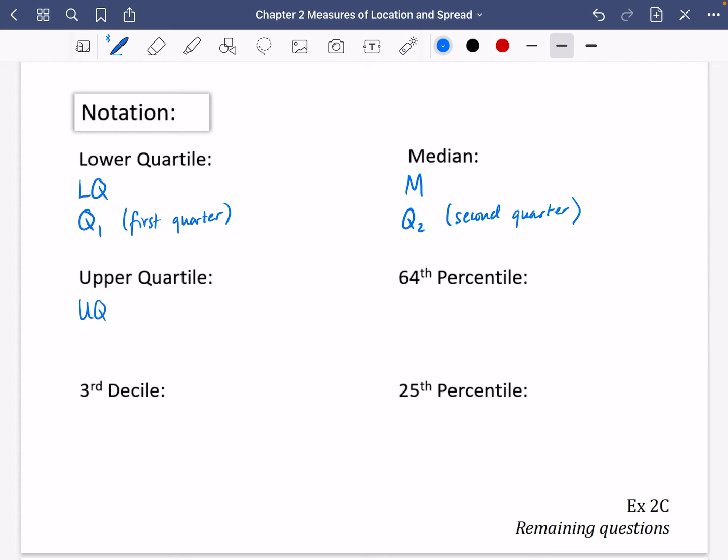The upper quartile we use UQ, but sometimes we use Q₃ because it's the third quarter of the way along. The 64th percentile: we use a capital letter P and we just do a little 64 in the corner to show that it's the 64th percentile.